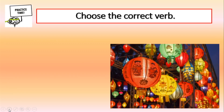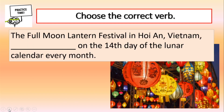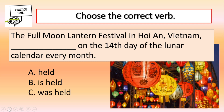Let's practice using the correct verb. The full moon lantern festival in Hoi An, Vietnam, on the 14th day of the lunar calendar every month. What is the missing verb — held, is held, or was held? Correct! It is is held. Is, the present simple tense form of the verb to be, is used because the full moon lantern festival happens every month on the 14th day of the lunar calendar.